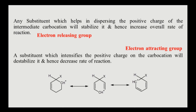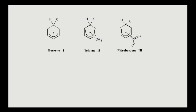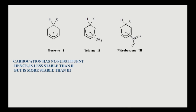Let us compare the rate of substitution in benzene, toluene, and nitrobenzene. The intermediate carbocations of the three compounds with electrophile X have distinct structures. In the carbocation of benzene, there is no substituent. Hence, it is less stable than that of toluene but more stable than that of nitrobenzene.